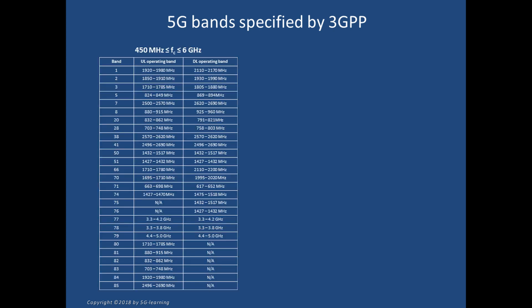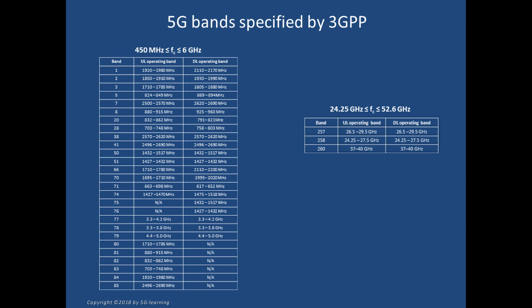3GPP 5G bands are arranged in two groups. The first one covers the range between 450 megahertz and 6 gigahertz; it is the domain of the centimeter waves. The second one covers the interval between 24 and 53 gigahertz, called the millimeter block.